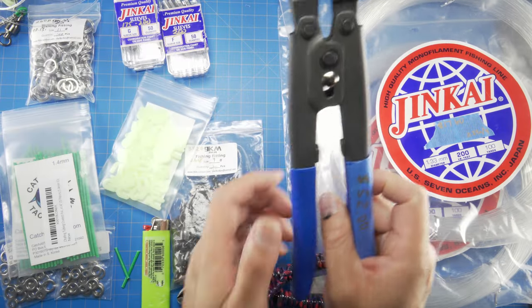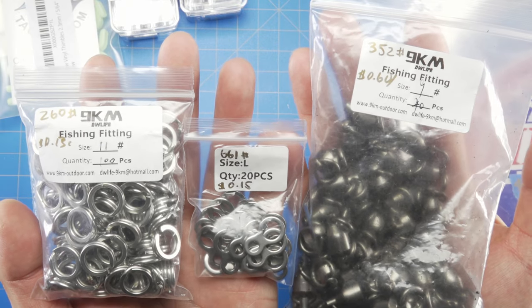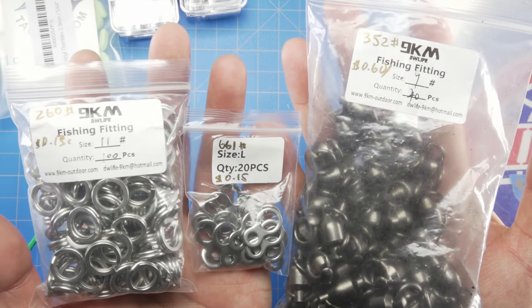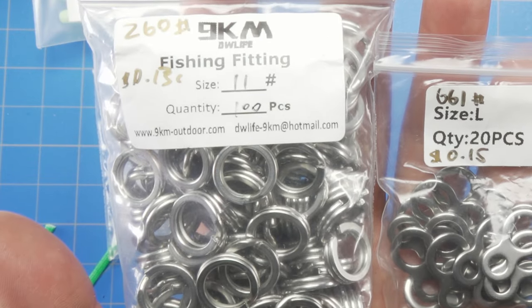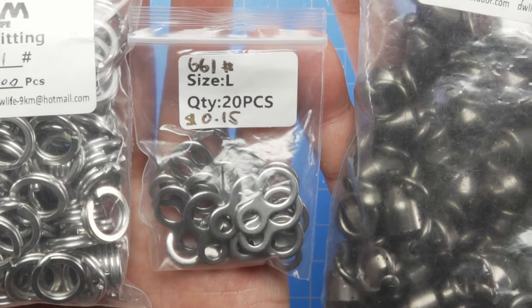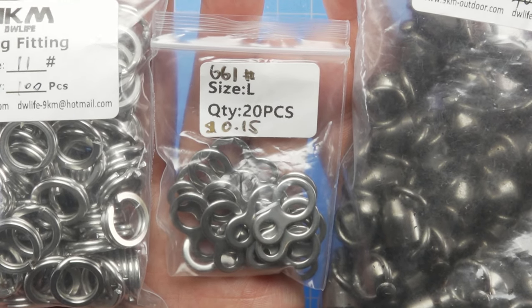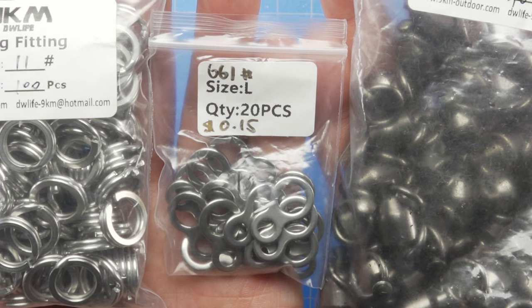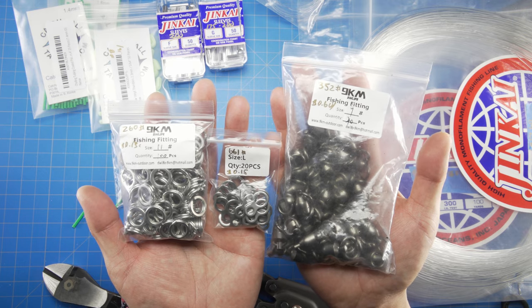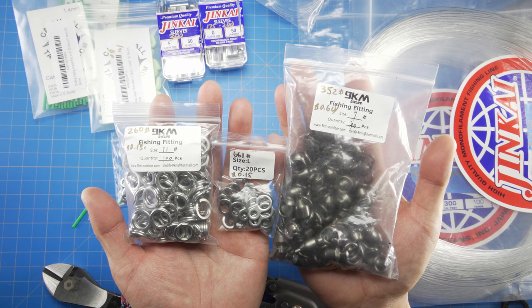This came out to 52. This is everything that I bought from this one specific company, 9KM. There is split rings on my left side. They are 260 pound rated. They come out to about 13 cents per piece. There is infinity rings, and those are 660 pound rated, and they are about 15 cents each. And then to my right is the swivels. These are 350 pound rated, and they come out to about 60 cents each.